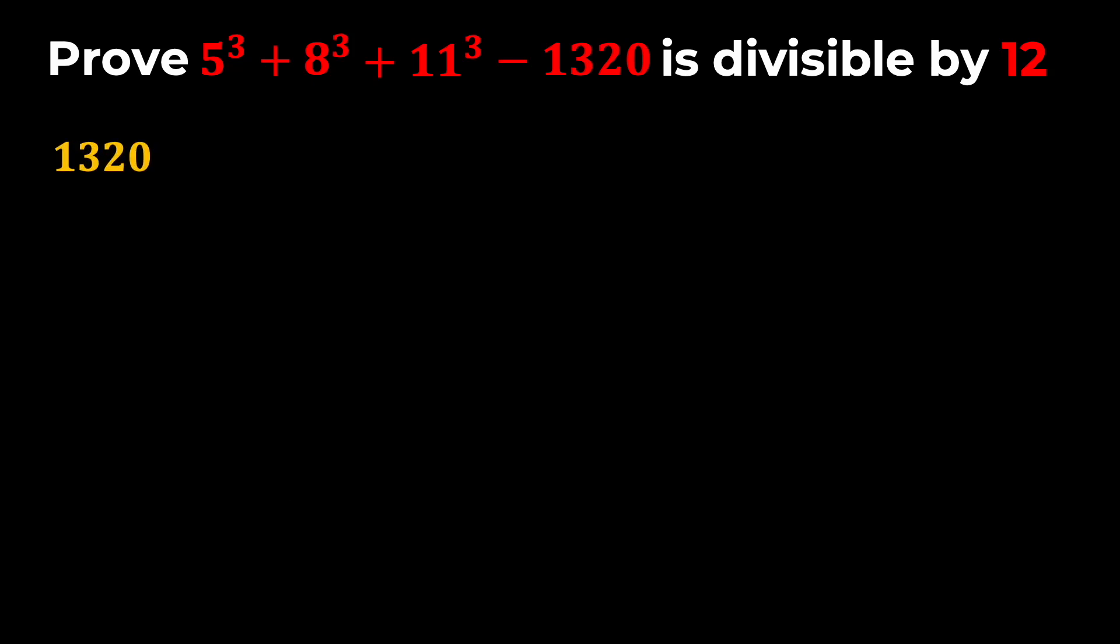So first of all, I'm going to start with the number 1320, and I'm going to factor it out. If I do that, I will have 2 times 2 times 2 times 3 times 5 times 11. Now notice that 2 times 2 times 2 is the same thing as 8, so I can basically say that 1320 is the same thing as 3 times 5 times 8 times 11. And notice that our number is 5 cubed plus 8 cubed plus 11 cubed minus 3 times 5 times 8 times 11.